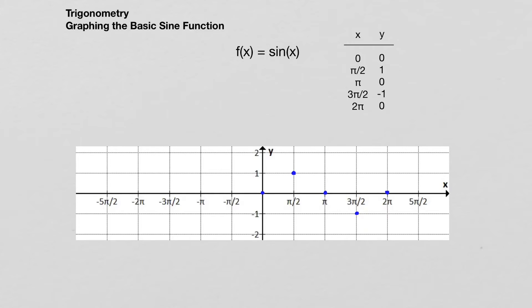Now I'm going to join these points with a smooth curve. Hopefully somewhat smooth. That's pretty wobbly. So there is one cycle or one period of the sine function. Keep in mind that the period of the sine function is two pi. If we go from zero to two pi, we've graphed one cycle of the basic sine function.